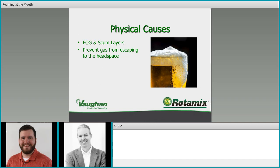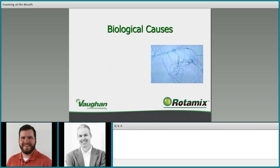Fog and scum layers are more rapid rise-type scenarios — they prevent gas from escaping to the headspace. If you have a very thick scum layer on the surface, gas can no longer pass through into the headspace; it builds up in the digester volume. This is most likely to cause a rapid rise or digester burping incident where gas builds up for a period of time, develops enough pressure to burst through the scum layer, and you see burping or sludge overflow — generally very dramatic, all-at-once type events.